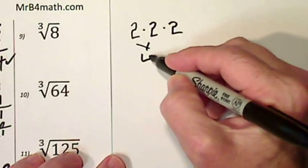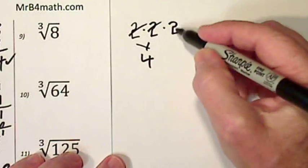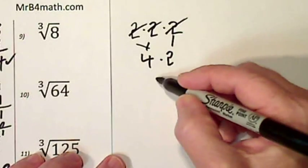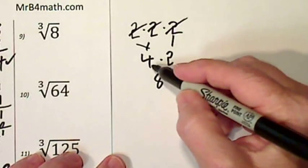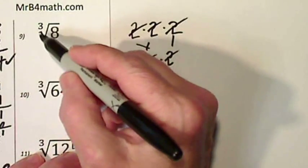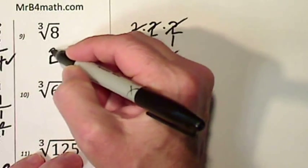2 times 2 would be 4. Takes care of them. Bring that one down. 4 times 2 is 8. Takes care of them. So the cube root of 8 is 2.